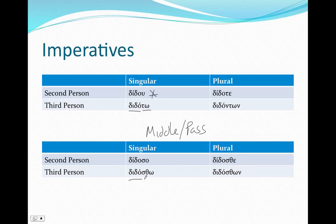The only time we're going to see that long stem is in the active voice, and that's only going to be in the singular. Singular, long stem, active — all the rest, short stems. And by short stems I mean an omicron, not omega — omicron or epsilon.